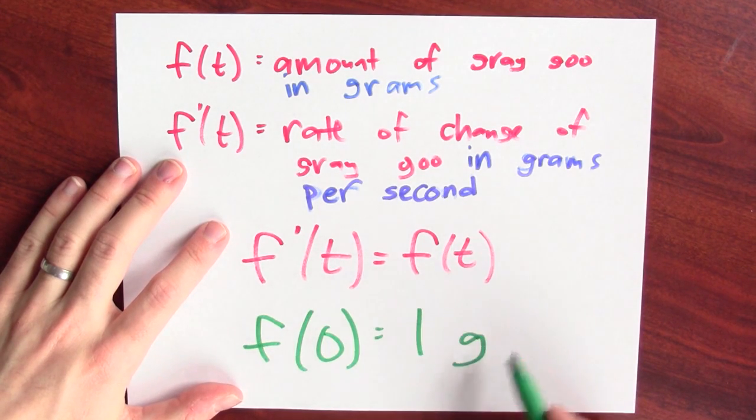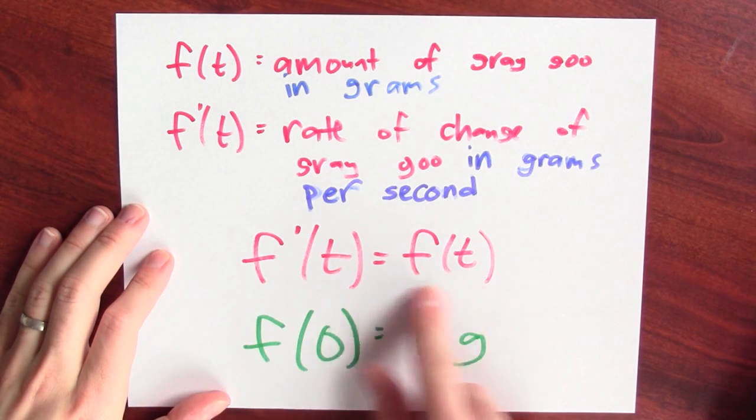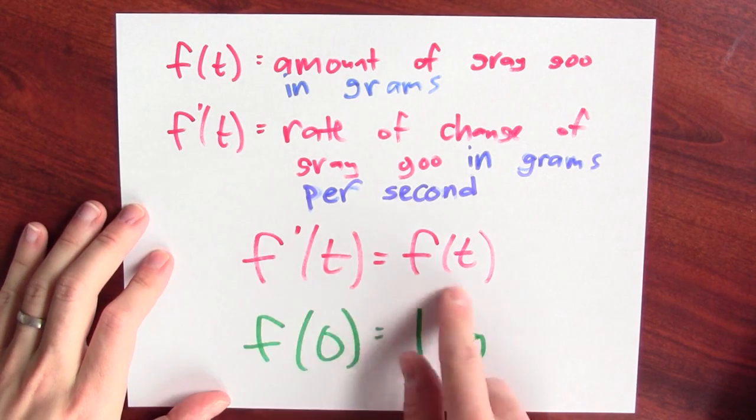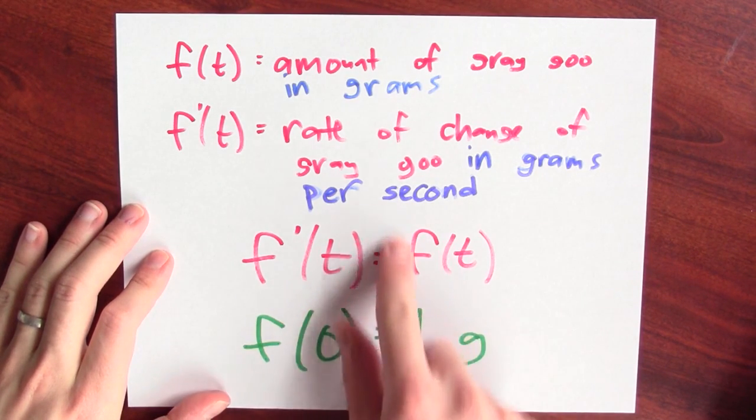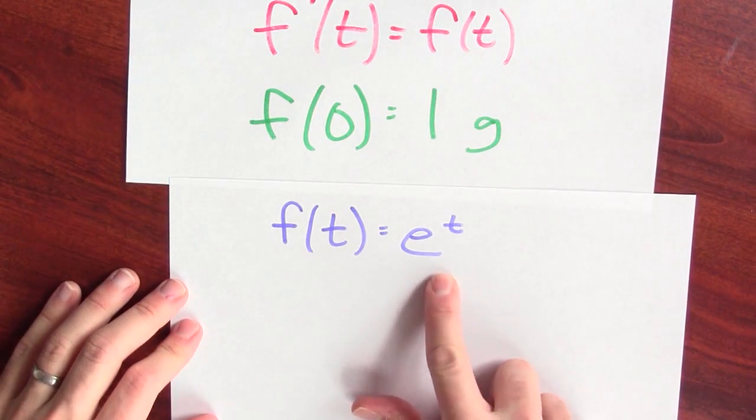We can write down an equation for f of t. I know a function whose value at zero is one and whose derivative is itself, whose rate of change is proportional to itself with proportionality constant one. That function is just e to the t.